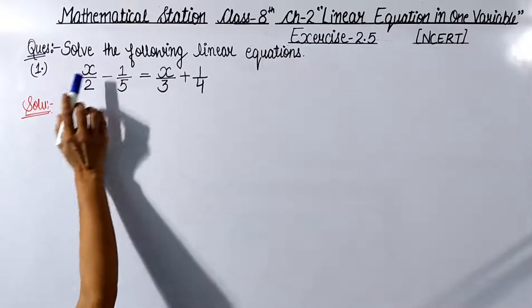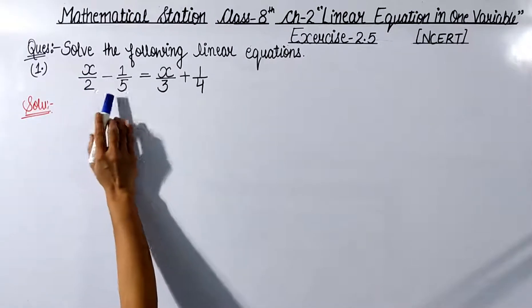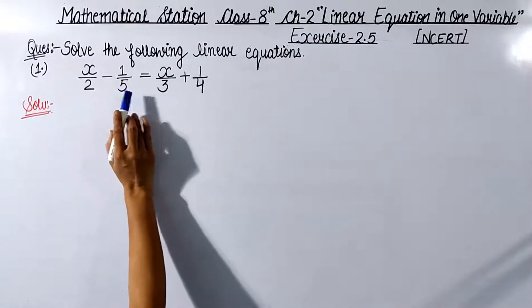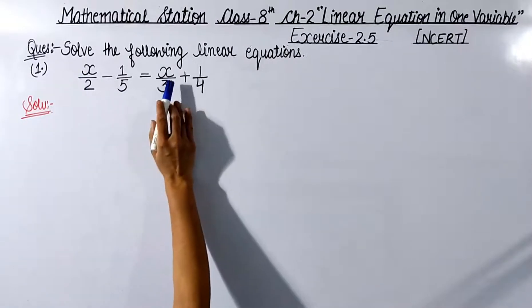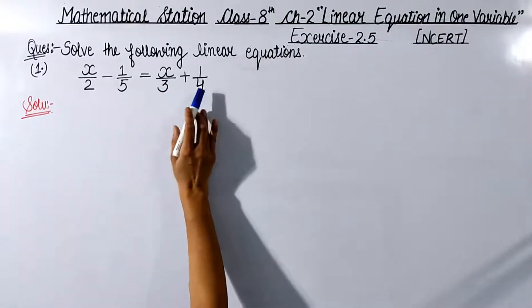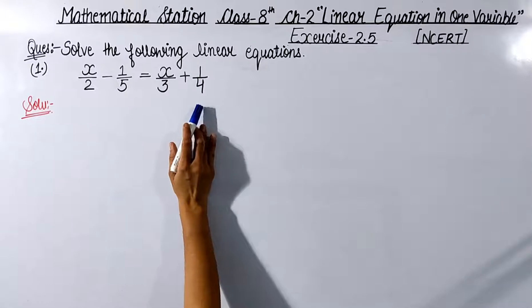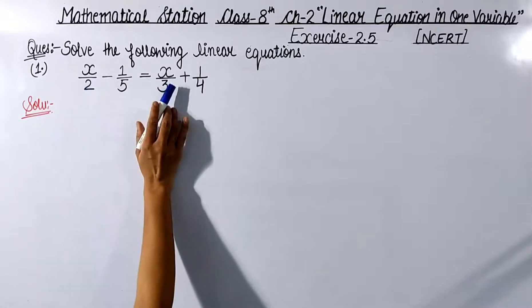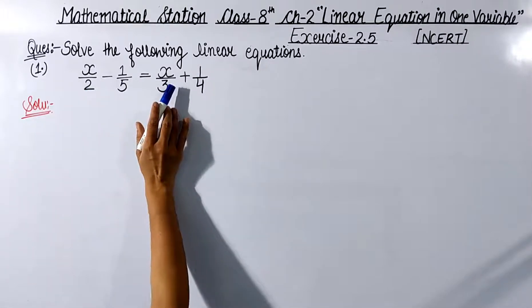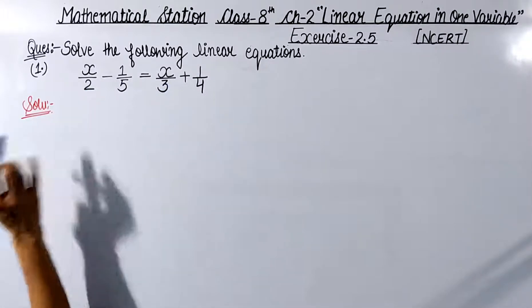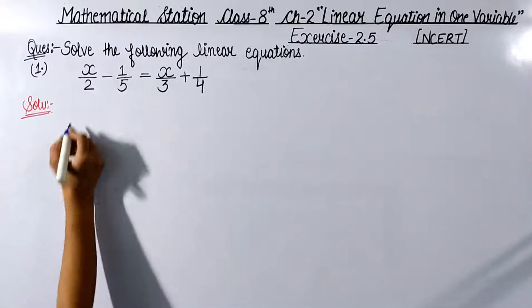The first equation is: x upon 2 minus 1 upon 5 is equals to x upon 3 plus 1 upon 4. In this equation there is a variable x. We have to solve the equation by finding x's value. Let's start the solution.